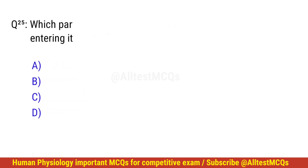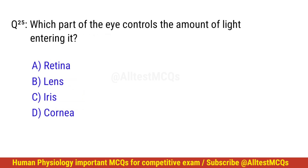Question number 25. Which part of the eye controls the amount of light entering it? The right option is C: Iris.